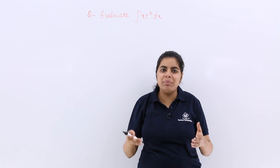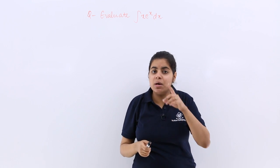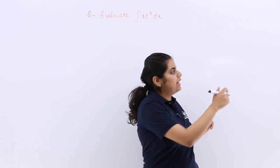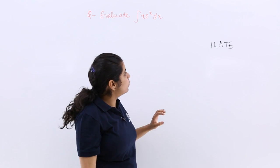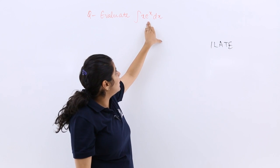Now I see that it can be easily done by integration by parts, but what was the formula? What priority? The priority was decided by ILATE, and according to it, x and e raised to the power x are there.